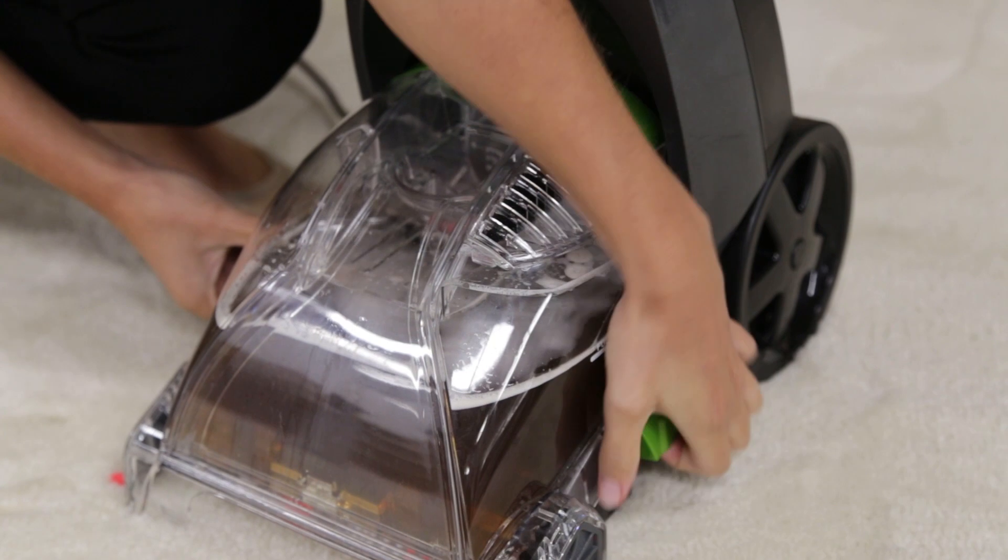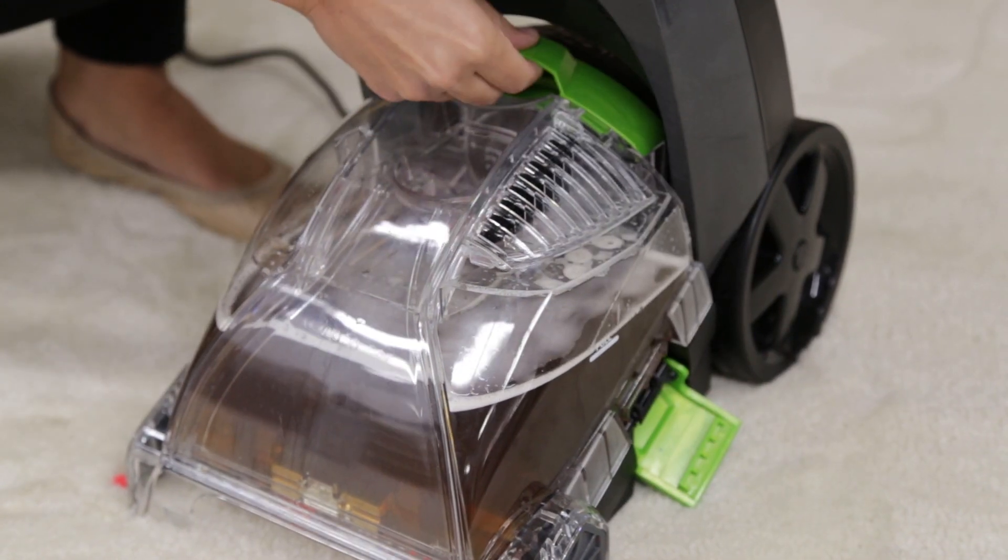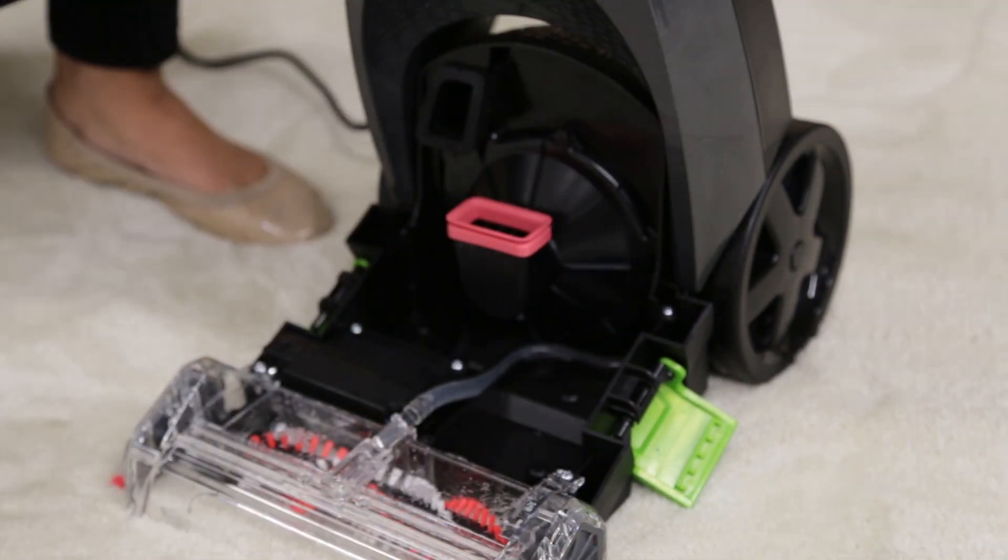First, remove the collection tank by pulling up and out on the latches on both sides of the tank. Carefully remove the tank by lifting up on the tank carry handle.